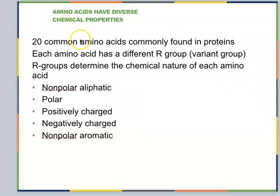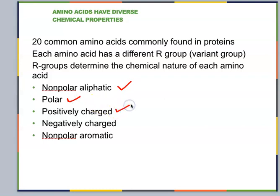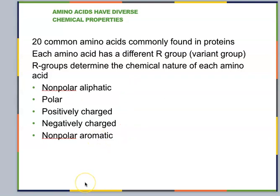There are 20 different common amino acids, each with a different R group or variant group. It's that R group that actually determines the chemical behavior and nature of each amino acid. There are five different groups of amino acids: nonpolar — they don't interact with water well; polar — they interact with water well; positively charged — looking for negatively charged structures; negatively charged — looking for positively charged; and a nonpolar aromatic group.